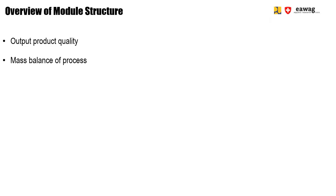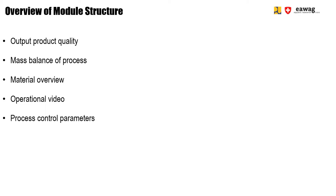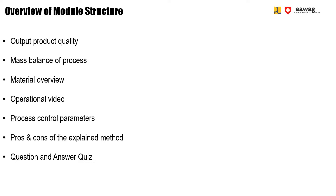To end the introduction module for this chapter, we want to provide you with an overview of what the other modules in general will look like. Each module will tell you about one of the particular post-processing operations and will start with a description of the output product quality. Then we will cover the mass balance of the discussed post-processing step, followed by an overview of the required materials. Then we will move to the operational video, going step by step through the required activities, followed by monitoring of important process control parameters. Finally, we will give you pros and cons for each operation step to help you decide which post-processing operation fits best for your BSF site, and end with questions and answers to refresh your knowledge.